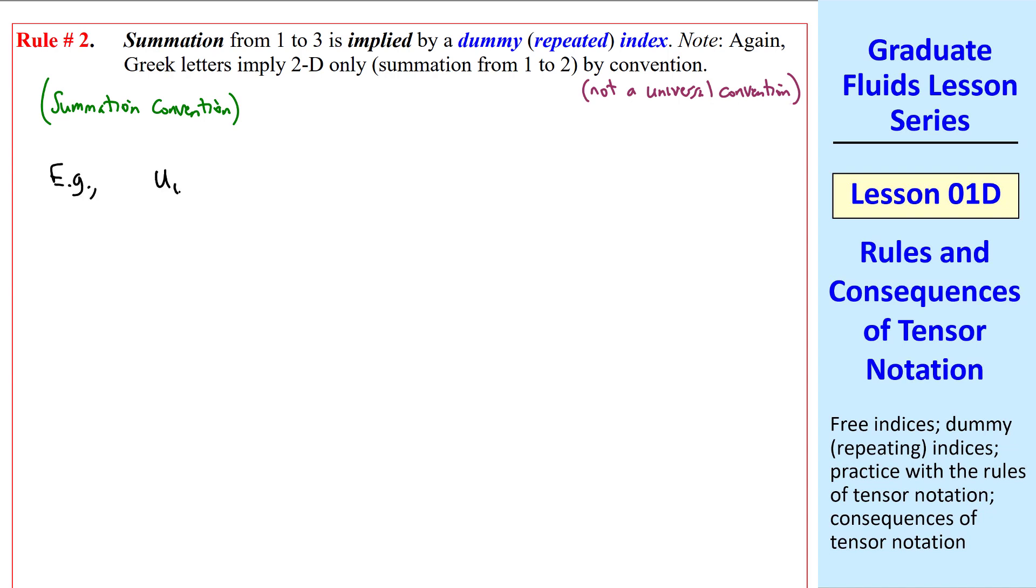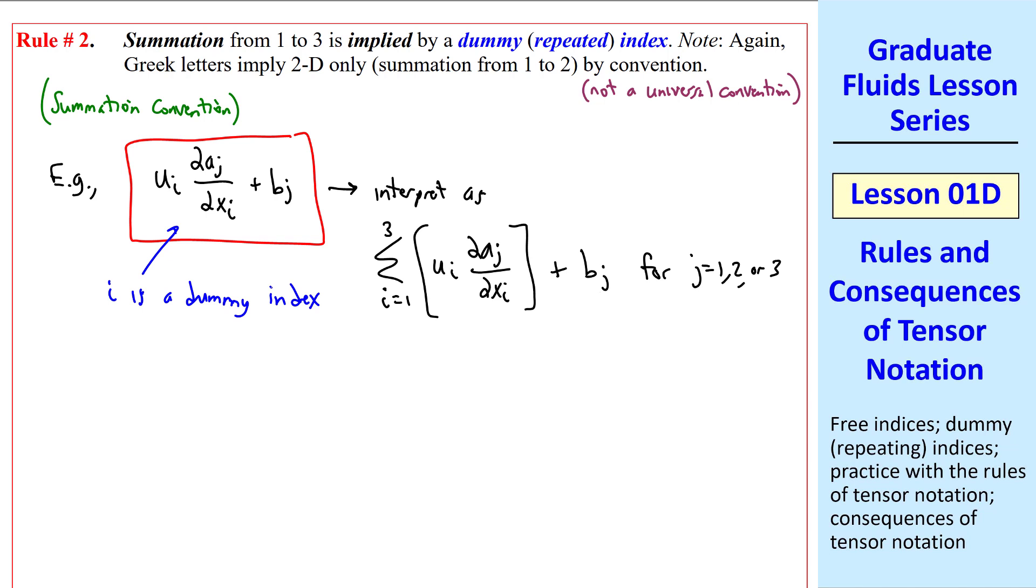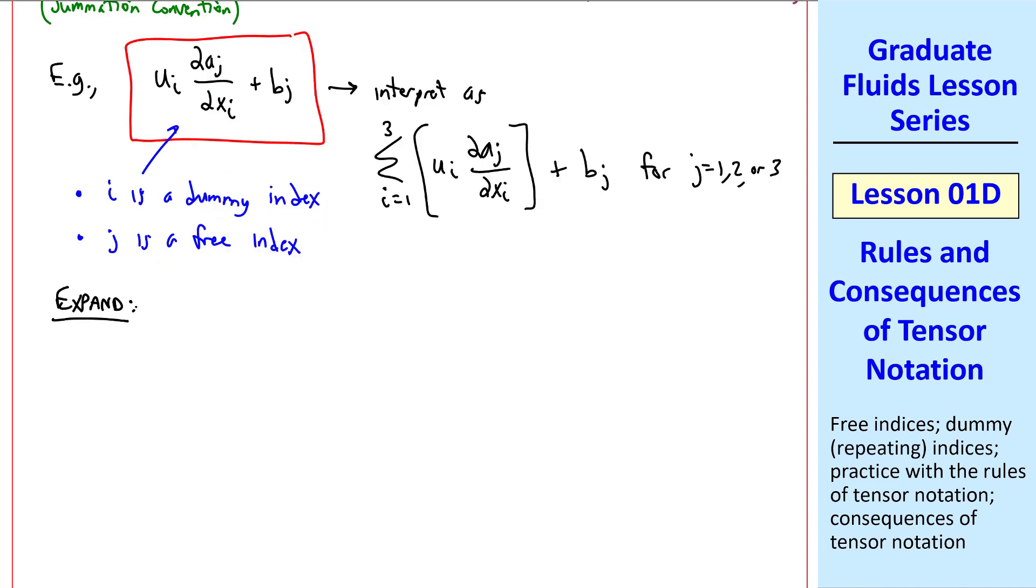I'll do an example. Suppose we have this expression, ui del aj del xi plus bj. After you get used to tensor notation, you will immediately interpret this as the summation from i equal 1 to 3, ui del aj del xi, plus bj for j equal 1, 2, or 3. Because in this example, i is a dummy index, but j is a free index. The i appears twice in this term. The j appears only once in each of these terms. Again, we can expand.